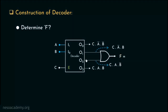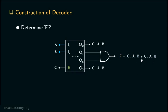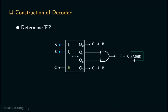So O1 is C·Ā·B, O2 is C·A·B̄, and finally O3 is C·A·B. F becomes O1 OR O2 — in other words, C·A·B̄ OR C·Ā·B. Taking C common, it becomes C·(Ā·B OR A·B̄), which is actually C·(A XOR B). And thus we determine F. This is how the enable line can be used as input, and this ability comes in very handy during the expansion of decoders.